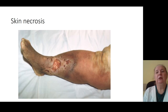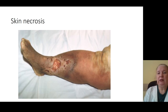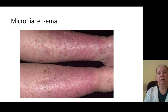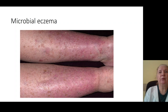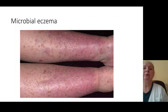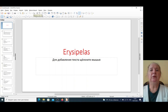Sometimes relapse of erysipelas causes formation of trophic disorders of the skin and formation of hyperpigmentation and trophic disorders of tissue, including elephantiasis and edema of the skin of the leg. Eczema is shown with popular elements and exudation, sometimes peeling — there is no high fever or intoxication. Thank you for your time, and on the next lecture we will speak about anthrax.